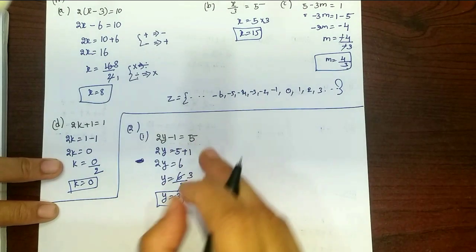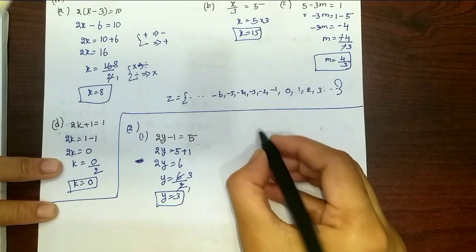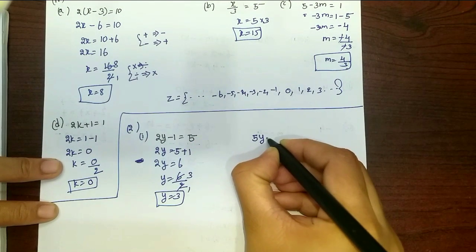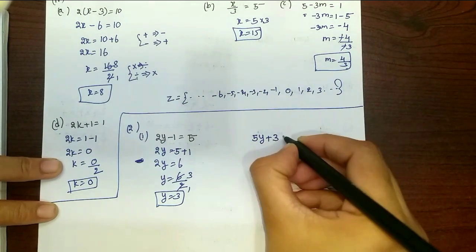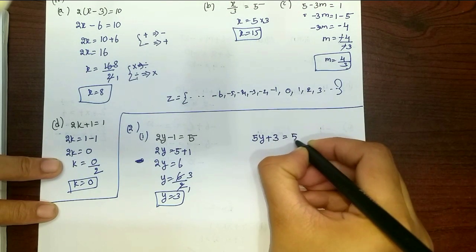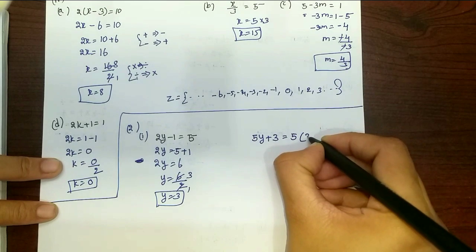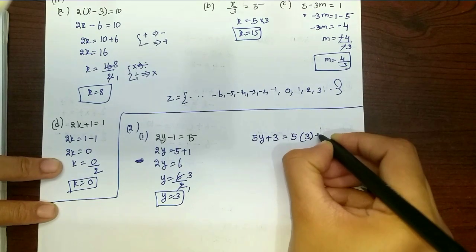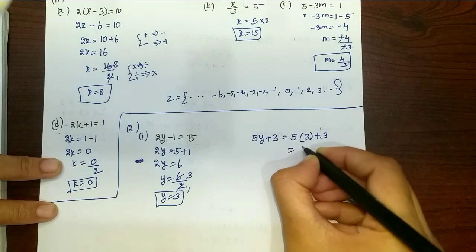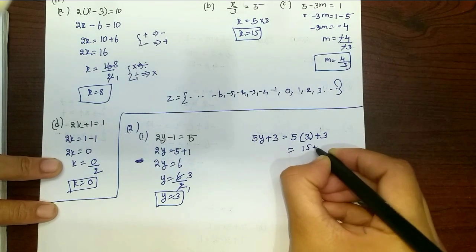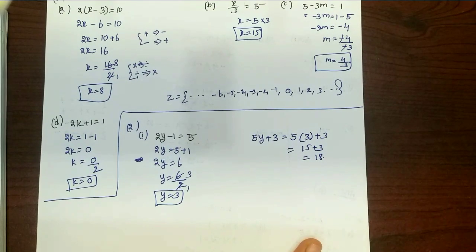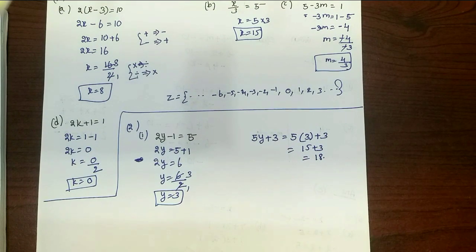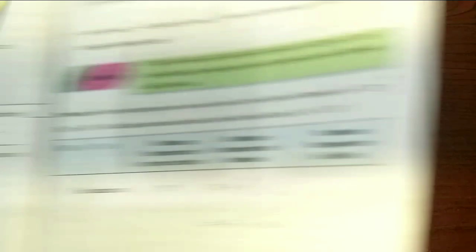Now we will find out the value of 5y plus 3. Substituting y equals 3: 5 into 3 is 15, plus 3 is 18. So the blank answer is 18.